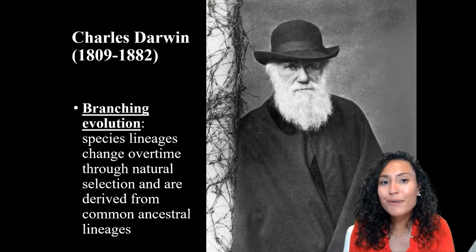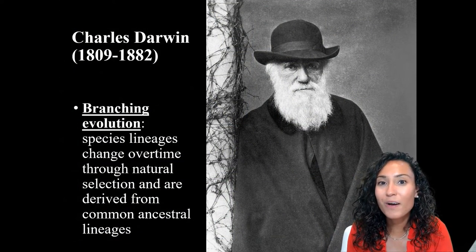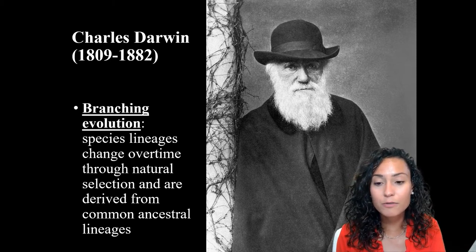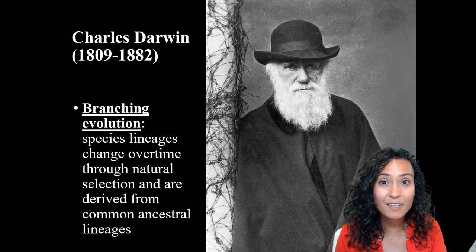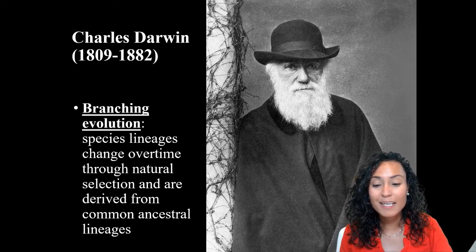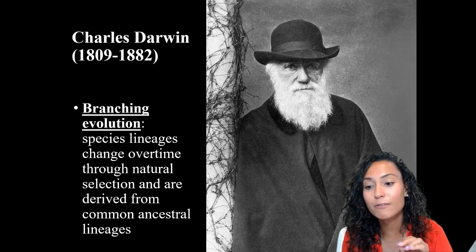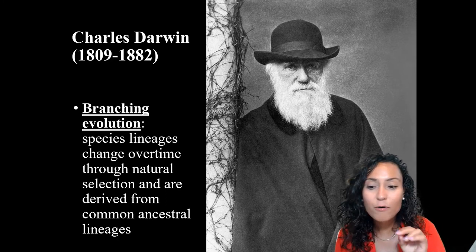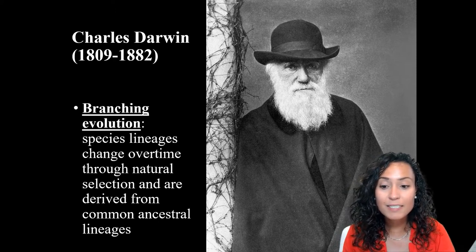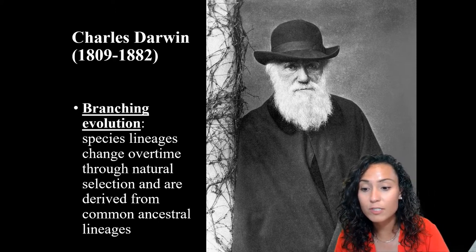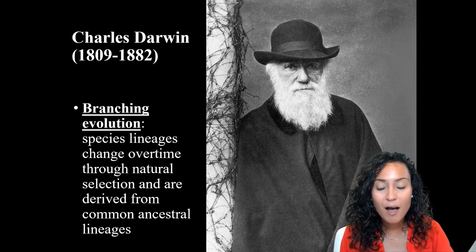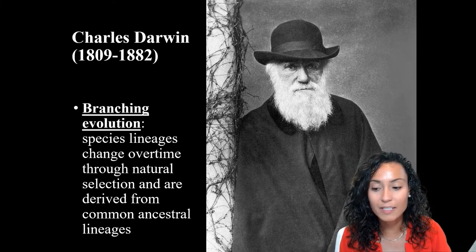As we learned in Module 1.1, Charles Darwin played a pivotal role in shaping archaeological theories about the antiquity of humanity. In this module, we'll explore in more depth his idea of branching evolution. In The Origins of Species, Darwin proposed the idea that species lineages change over time through natural selection and are derived from a common ancestral lineage.